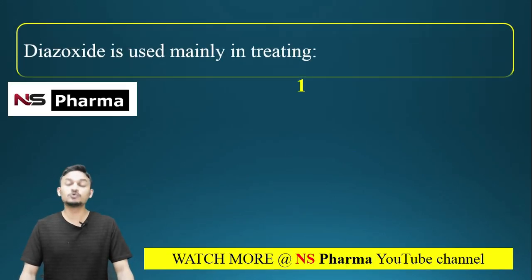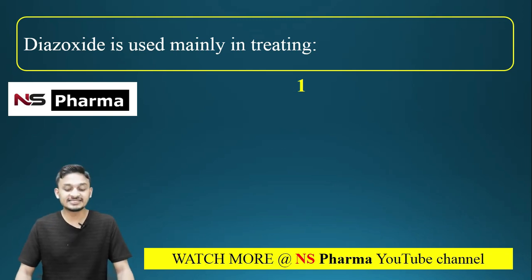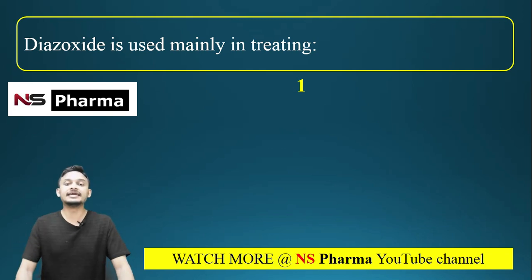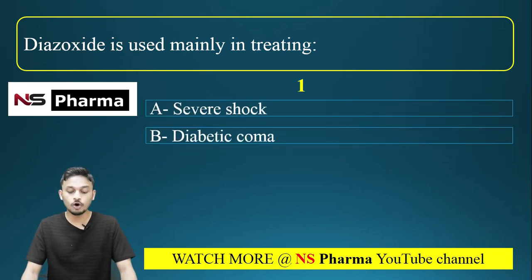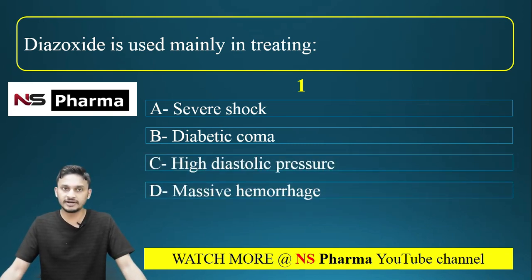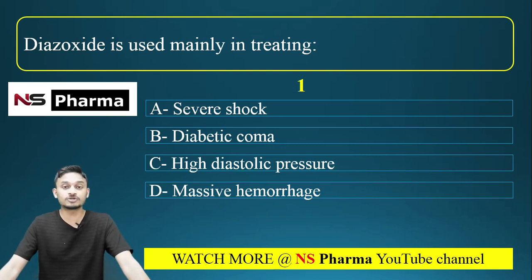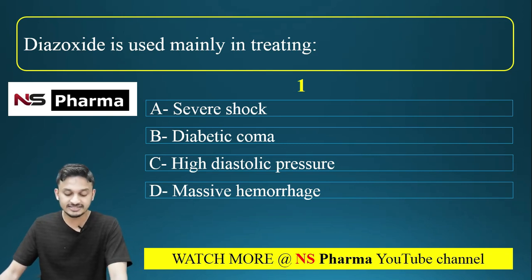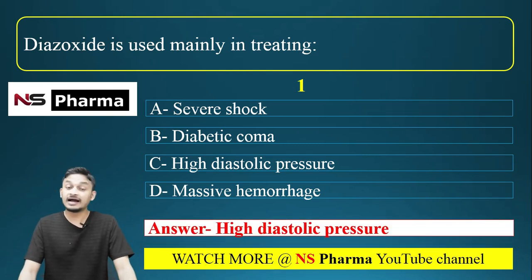The first question is: Diazoxide is used mainly in treating — options are: option A, severe shock; option B, diabetic coma; option C, high diastolic pressure; option D, massive hemorrhoids. The correct answer is option C, high diastolic pressure.